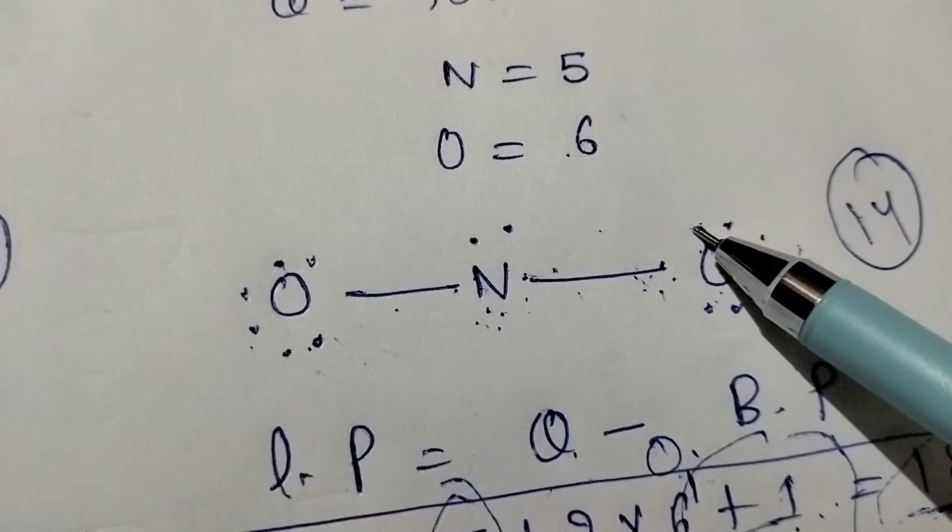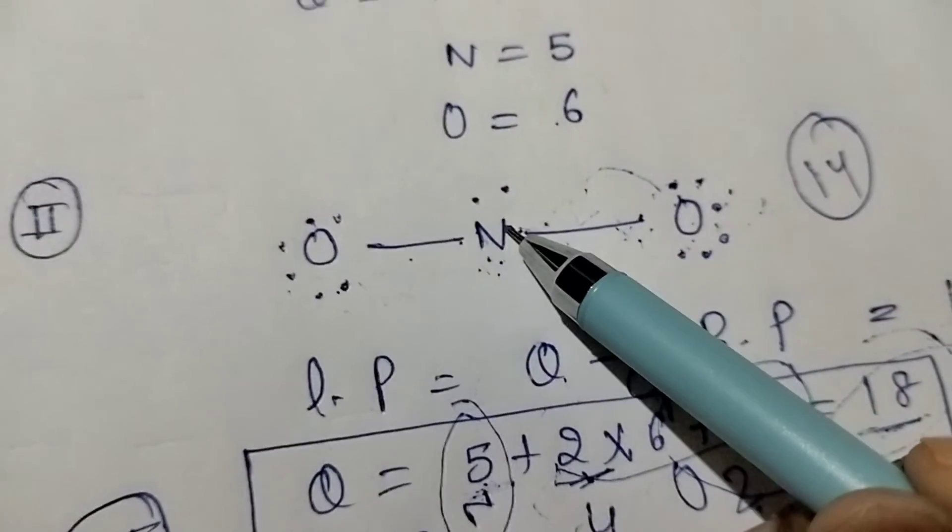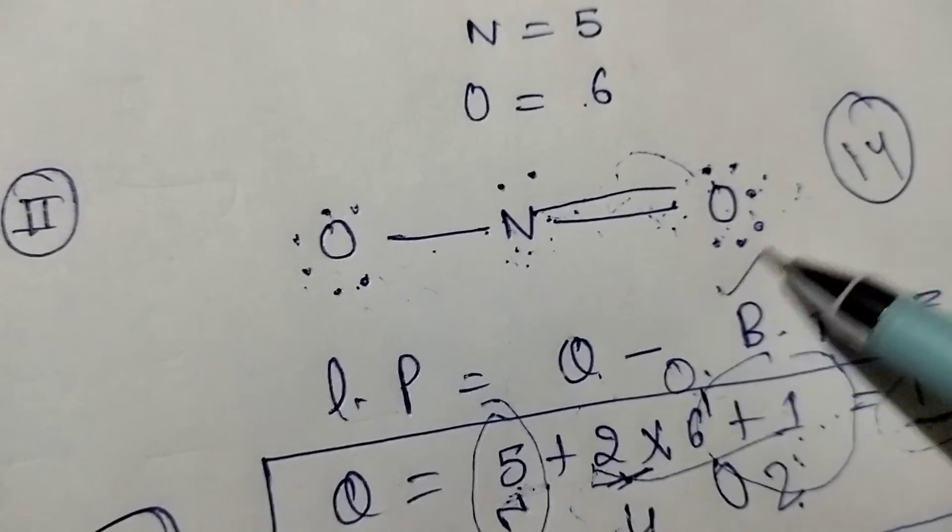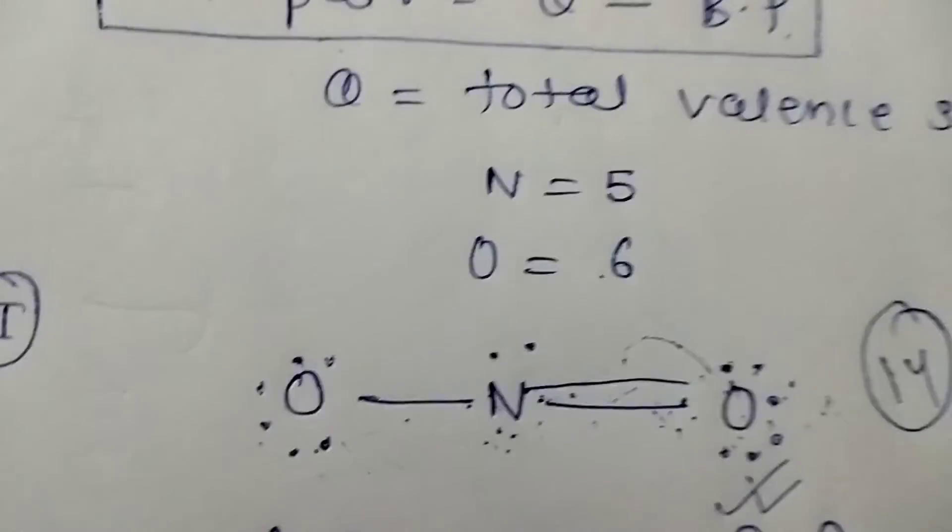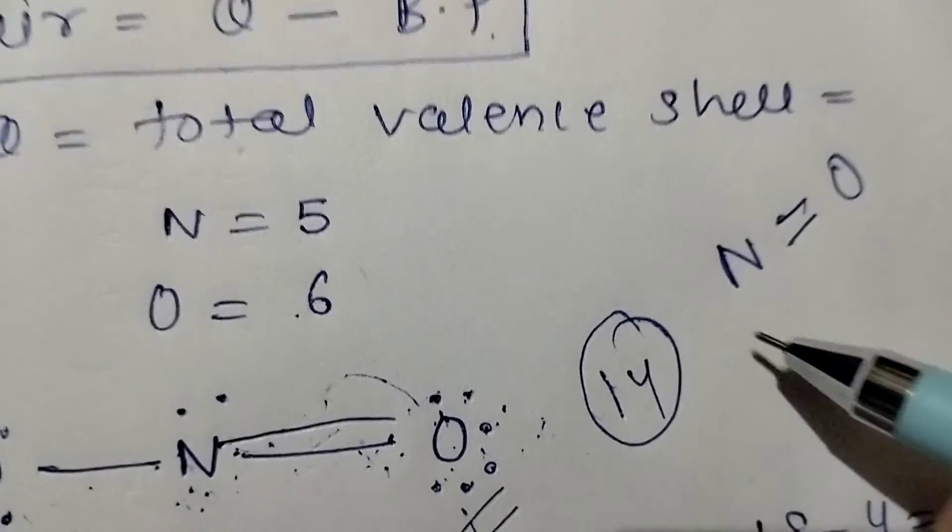So this lone pair, it just puts there and it will be converted into one bond. And here are the structures. Simply, it behaves like this one.